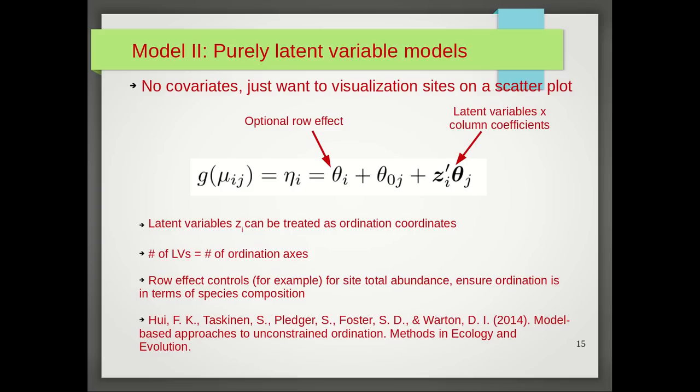You also have an optional row effect which controls, for example, for site total abundance, and this ensures that the ordination is in terms of species composition. It's a model-based approach to row standardization. The details regarding this model-based approach can be found in this paper listed at the bottom of this slide.